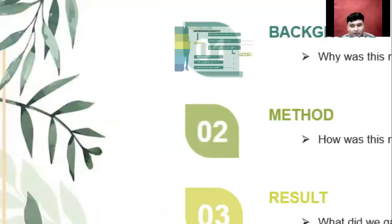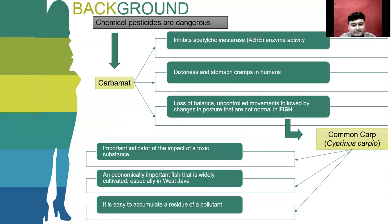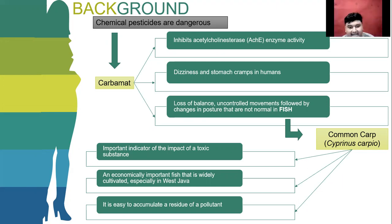Moving on to the background — why was this research conducted. Chemical pesticides are compounds that can endanger the health of living organisms. One of the pesticides still used today is carbamate. The toxicity of carbamate insecticide works by inhibiting the activity of the acetylcholinesterase (AChE) enzyme. The toxic nature of carbamate can lead to acute and chronic poisoning in humans, characterized by dizziness and stomach cramps. In insects, it is characterized by a decreased activity of the acetylcholinesterase enzyme to zero, making it no longer able to send nerve impulses to the synapse.